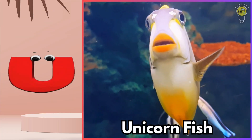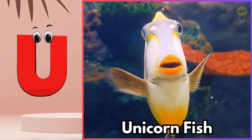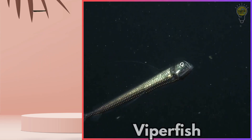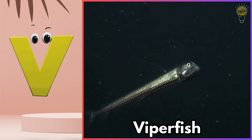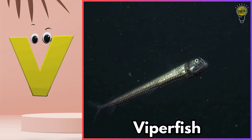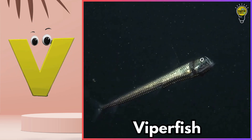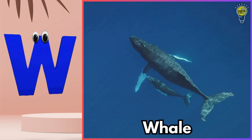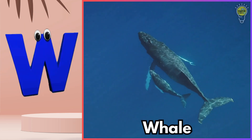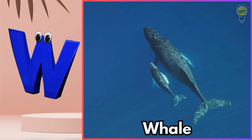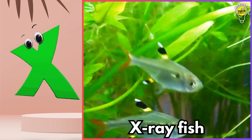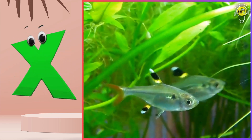U is for unicorn fish. Ah, unicorn fish. V is for viperfish. Vuh, viperfish. W is for whale. Wuh, whale. X is for x-ray fish. Zuh, x-ray fish.